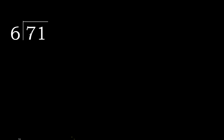71 divided by 6. 7 is not less, therefore it's 7. 6 multiplied by which number is nearest to 7 but not greater? 6 multiplied by 2 is 12, which is greater. 6 multiplied by 1 is 6 — it's not greater. 7 minus 6 is 1. Next.